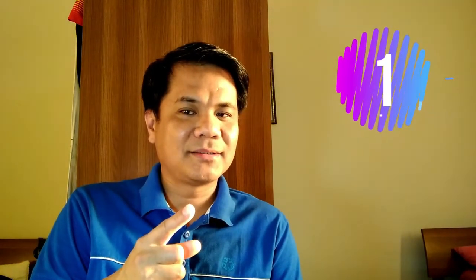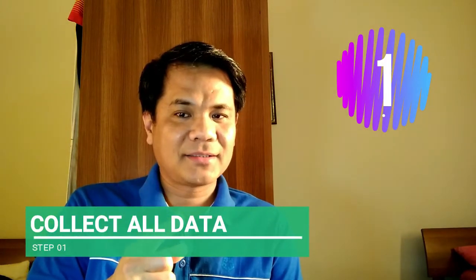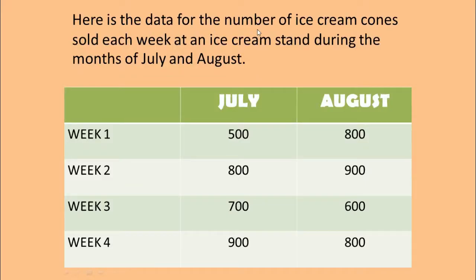Here are the steps for constructing a vertical double bar graph. Step number one: collect all your data. Here is the data for the number of ice cream cones sold each week at an ice cream stand during the months of July and August.